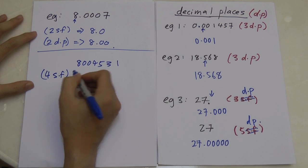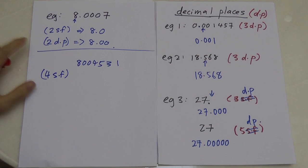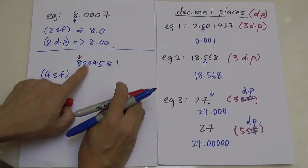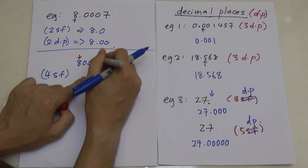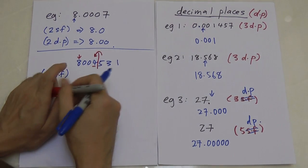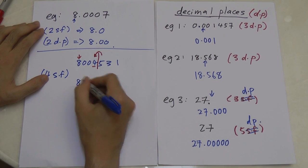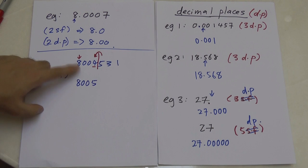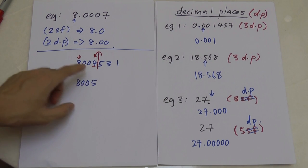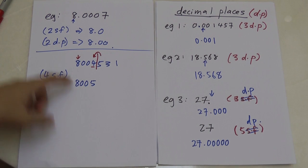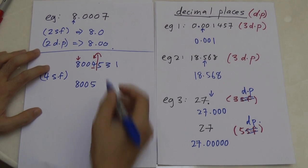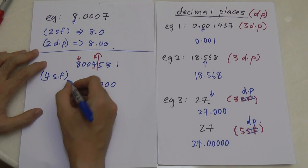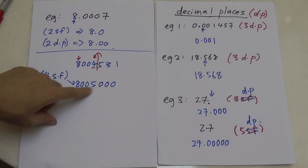For four significant figures on 8,004,531 — 8 is the first digit, so count one, two, three, four and draw a line. The next digit is 5 or bigger so we round up, giving 8,005. But we can't stop there because the place value changes — this must remain in the millions. So we replace the remaining digits with zeros, giving 8,005,000.